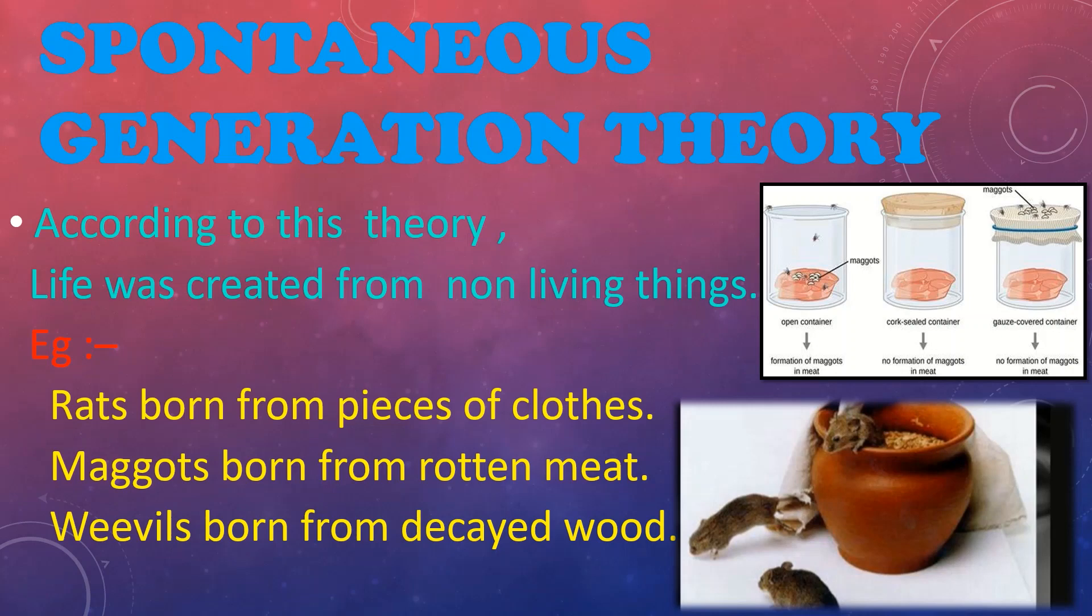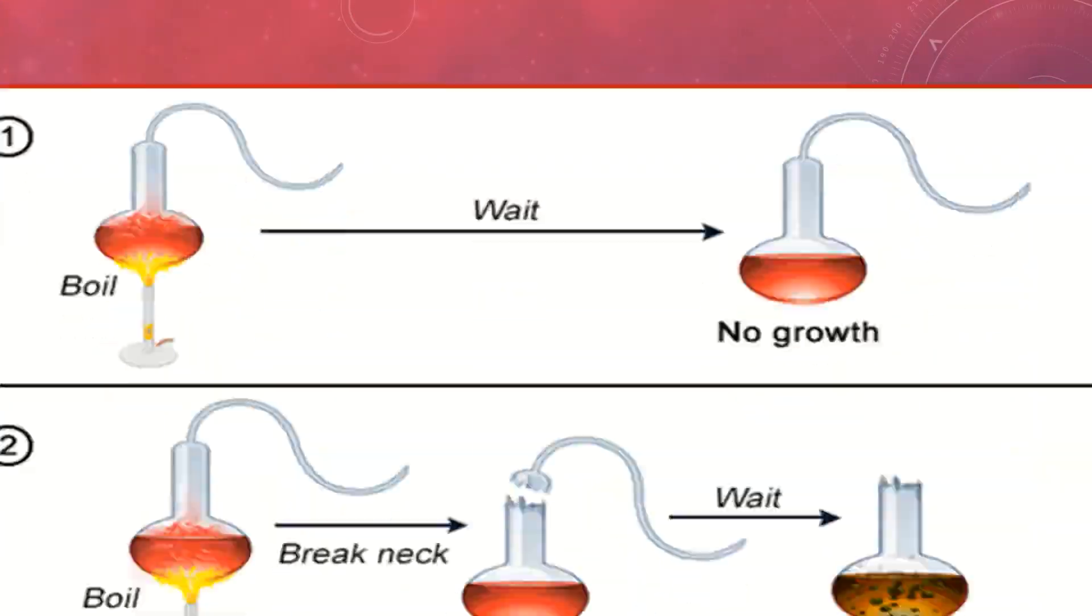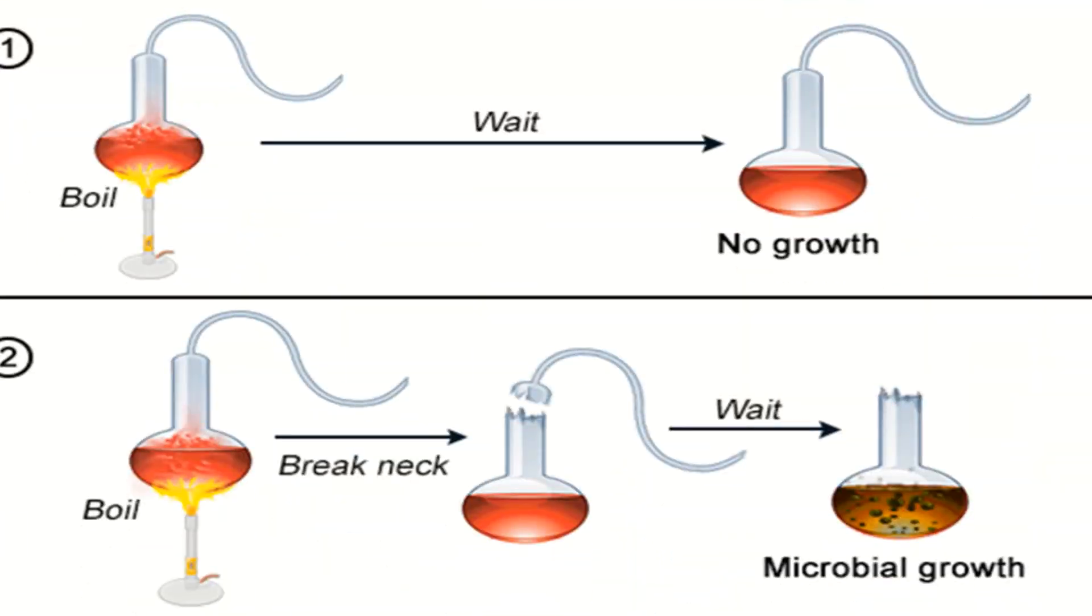Scientist Louis Pasteur proved that this is not a true theory about the origin of life by this experiment. First, you should get two swan neck flasks. Then add nutritional media to these two flasks. After that, break the neck from one flask. After some time, you can see microbial growth in the neck broken flask, but no changes in the other flask. So we can conclude that nutritional media is needed for growth of organisms.